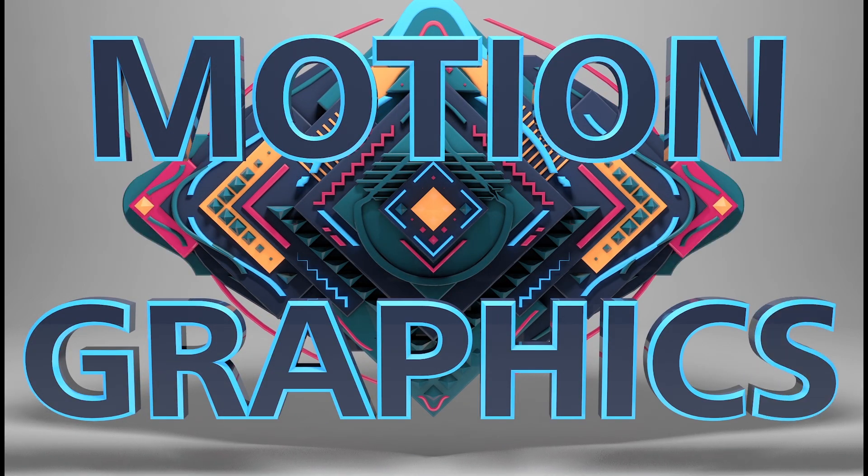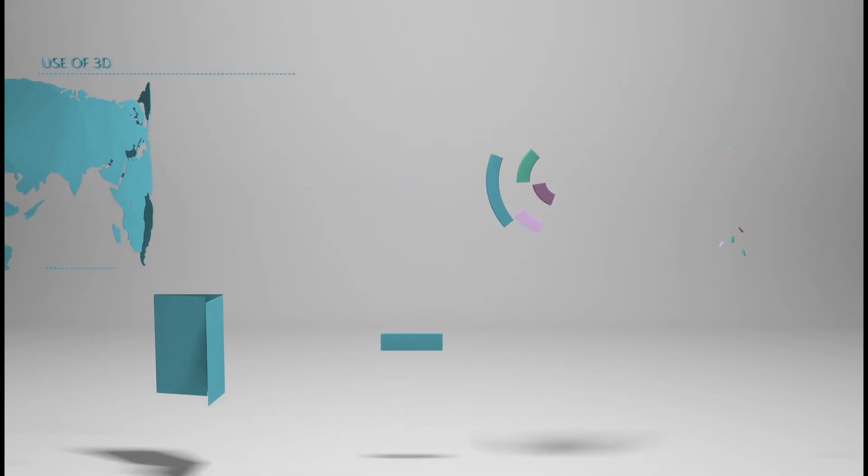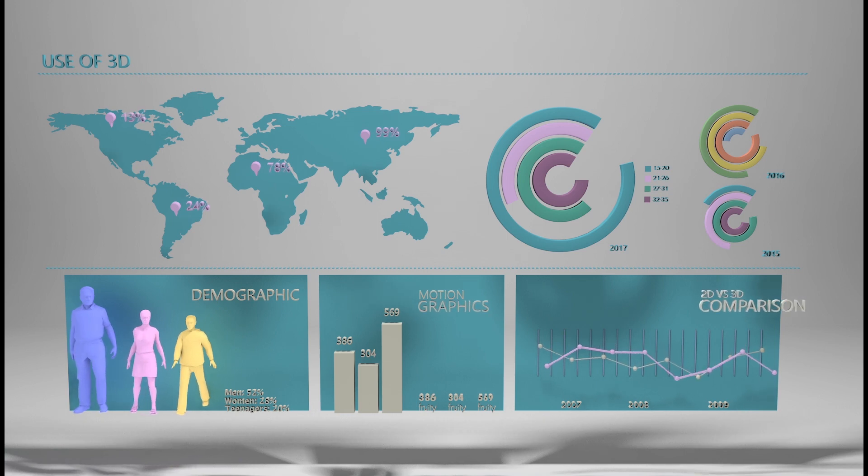Motion graphics is exactly what it says. Graphics in motion. So rather than animated objects, 3D motion graphics is more about animated visuals that tend to be putting forward information. Like this animation!